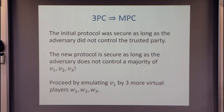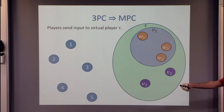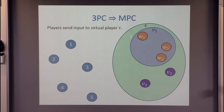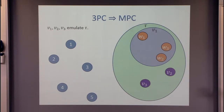We made progress — let's try to make more. Let's emulate v1 by three new virtual players w1, w2, and w3. Now the picture becomes more complicated: we have real players 1, 2, 3, 4, 5; virtual players w1, w2, w3, v2, v3 who actually participate in the protocol; and conceptual players v1 and Tau. The real players send inputs, which are emulated between v1, v2, v3. Then v1's actions are emulated by w1, w2, w3. We can think of this via a formula composed of three-input majority gates — each gate corresponds to a player being emulated by three sub-players, and the output wire corresponds to the trusted player Tau.